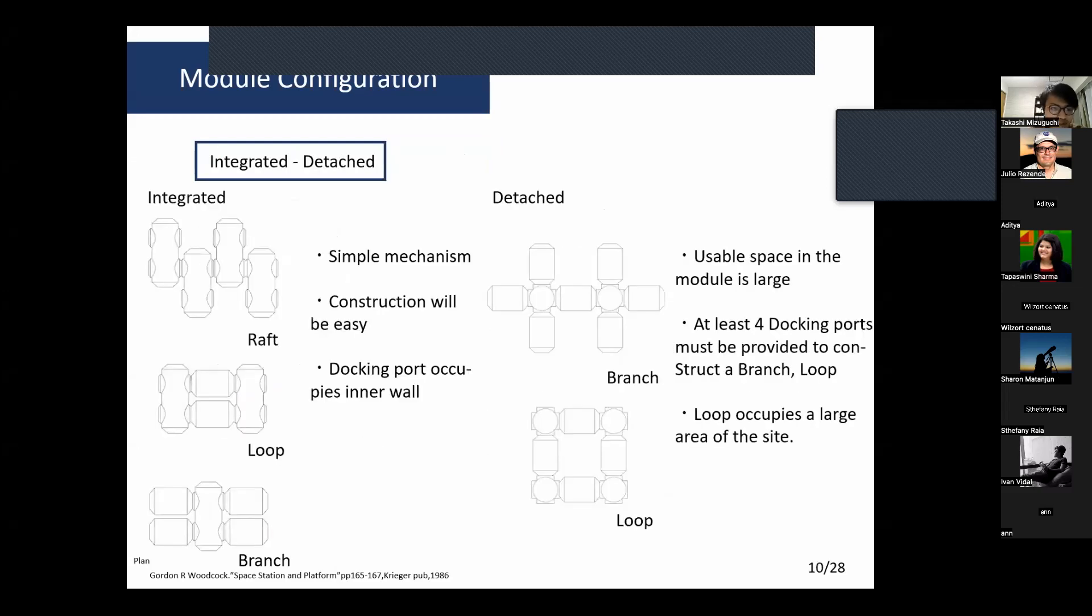There are also two classifications: integrated and detached. Integrated incorporates the docking mechanism into the module, while detached incorporates the docking mechanism into a node module. Integrated has a simple mechanism and construction is easy, but the docking port occupies inner space. Detached provides usable space in the module, but the node occupies a large area on the site.